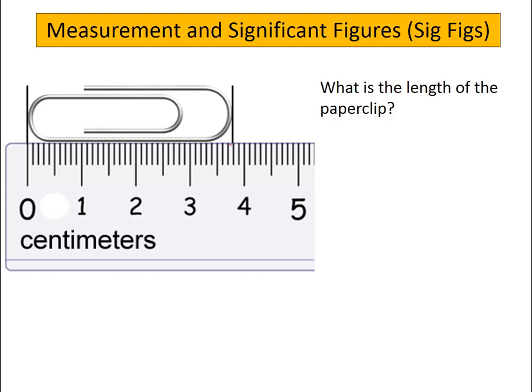We see that the length of the paperclip is somewhere between 3.7 and 3.8 centimeters, around in here. And so we might expect we'd say 3.7 something centimeters. We might want to estimate that next digit.